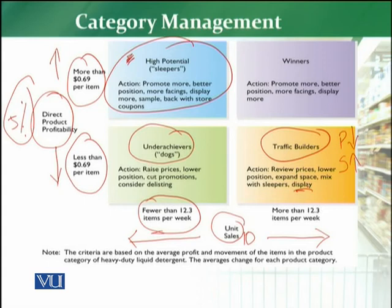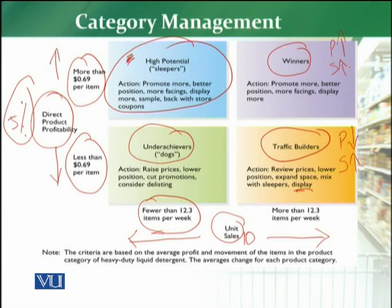The fourth category type is winners. These are the categories that every retailer targets and desires. These categories deliver high profitability as well as high sales. So they are winner categories — it is the retailer's wish that all their categories should be winner categories. Of course, within a retail store there will be winner categories, high potential categories, and others. Winner categories generate high profitability and high sales turnover.